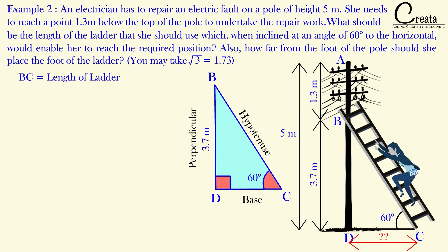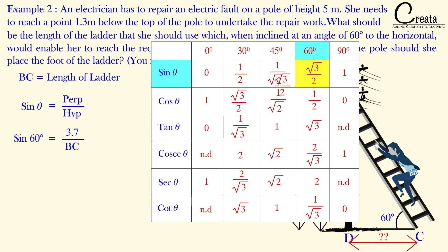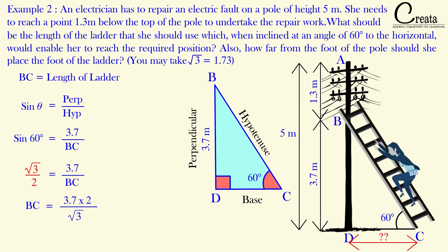From the trigonometric ratio table, sin 60° = √3/2. Putting in the values: √3/2 = 3.7 / BC. On solving, BC = 3.7 × 2 / √3. Substituting √3 = 1.73, we get BC = 4.28 meters. BC is the length of the ladder, so the length of the ladder is 4.28 meters. We have solved the first part of the question.